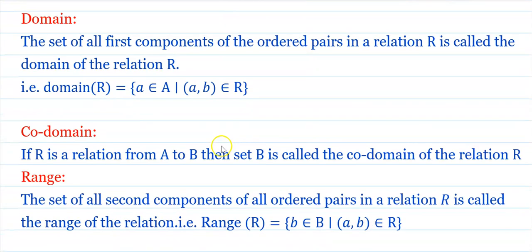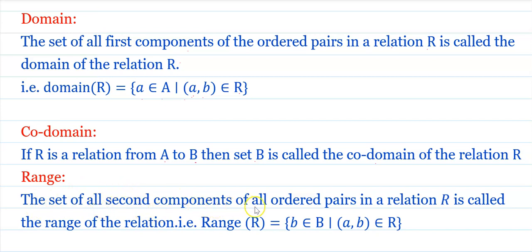Domain: The set of all first components of ordered pairs in relation R is called the domain of R. That is, domain of R = {a ∈ A : (a, b) ∈ R for some b}. Codomain: If R is a relation from A to B, then set B is called the codomain of R. Range: The set of all second components of all ordered pairs in relation R is called the range of R, i.e., range of R = {b ∈ B : (a, b) ∈ R for some a}.